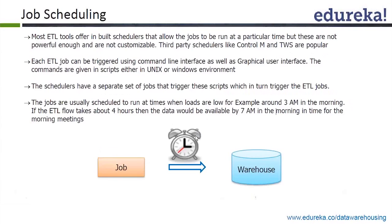The whole process of extraction, transformation and loading — if it's running on a day-to-day basis, you don't expect someone to go and run it every night. If it's an automated system, you want to schedule those ETL jobs from A to B and B to C, and finally load into your data warehouse every day. So that process is called job scheduling.